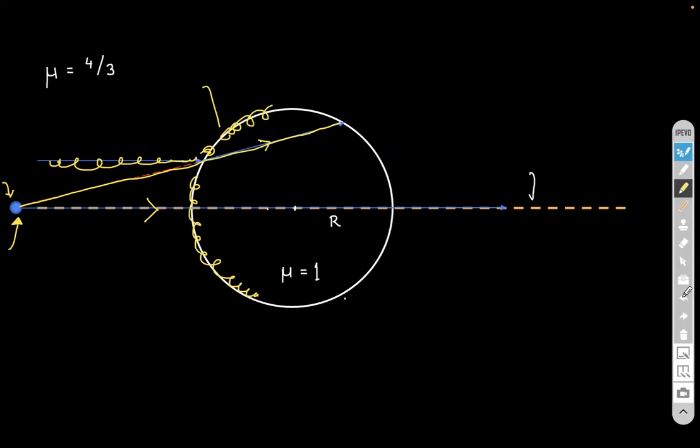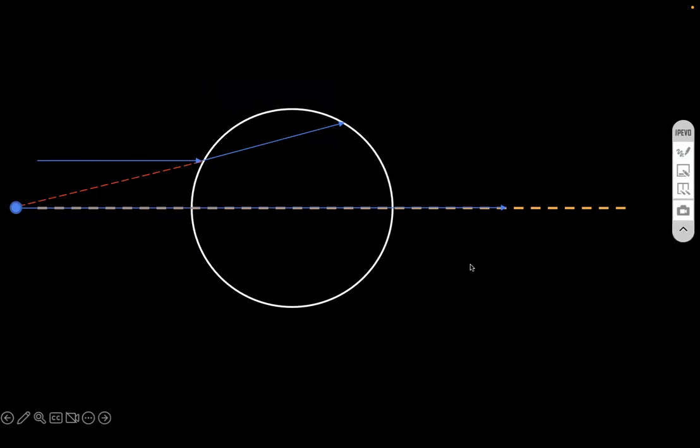So what I'm trying to tell you is that the image of the first interface, which you can call it as I1 over here is acting like an object for the second interface, because second interface will feel as if the rays are coming from this point. Isn't it? So we need to draw the further path of this ray. So when you do that, you can see now the ray will bend towards the normal. So it will be something like this.